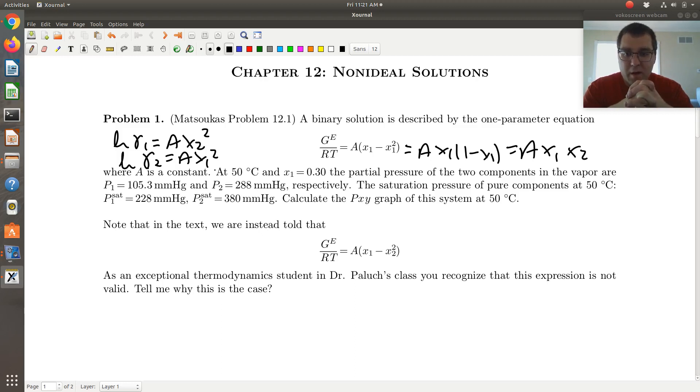We have two pure component vapor pressures, and we have a GE model. And so if I'm going to use modified Raoult's law, what I'm going to need is an analytic expression for gamma. And before I can have my analytic expression for gamma, I need to parameterize A.